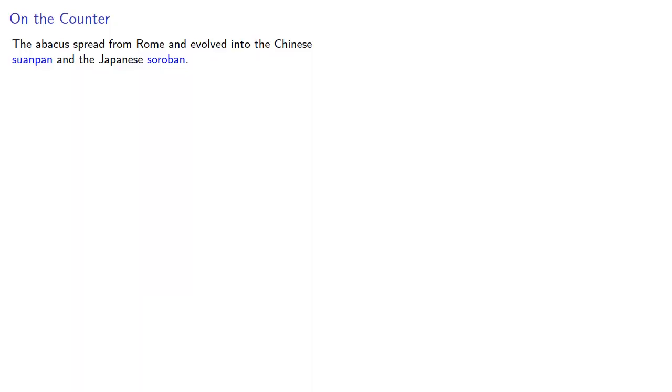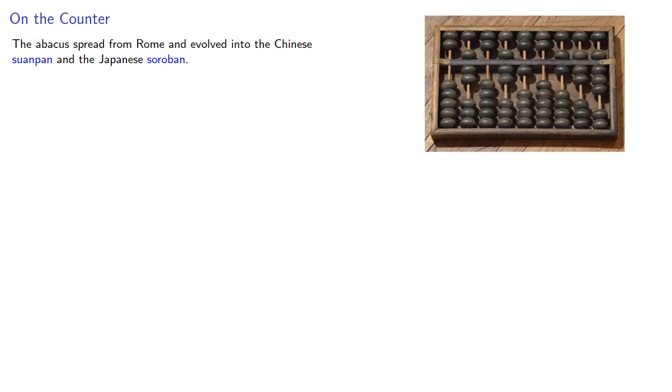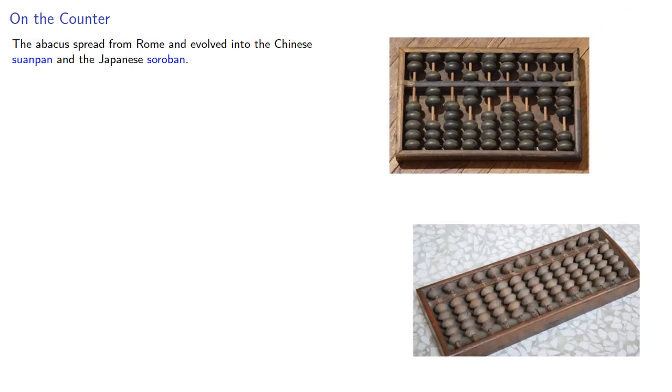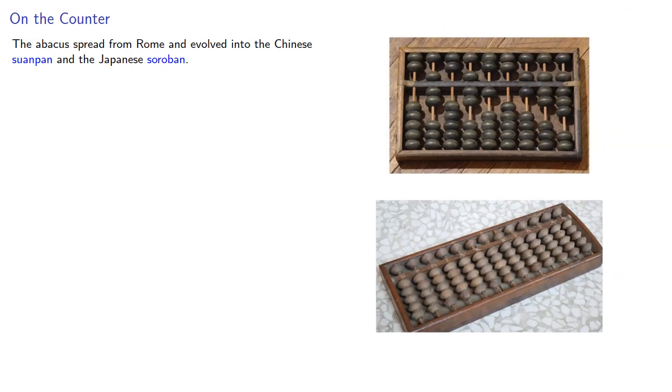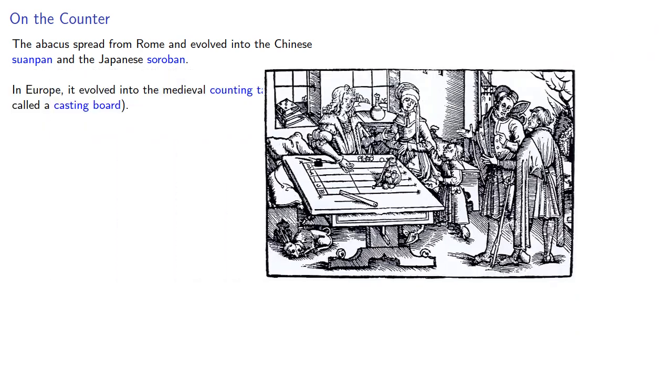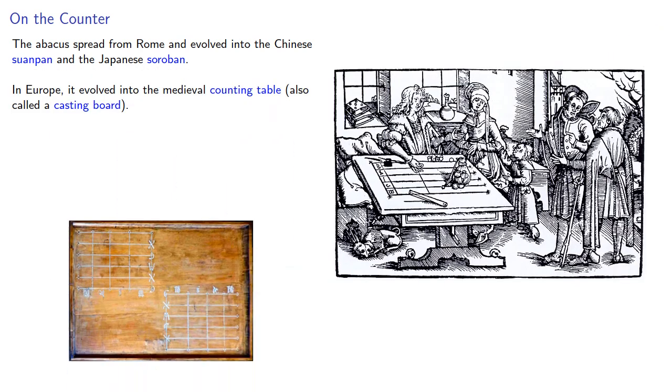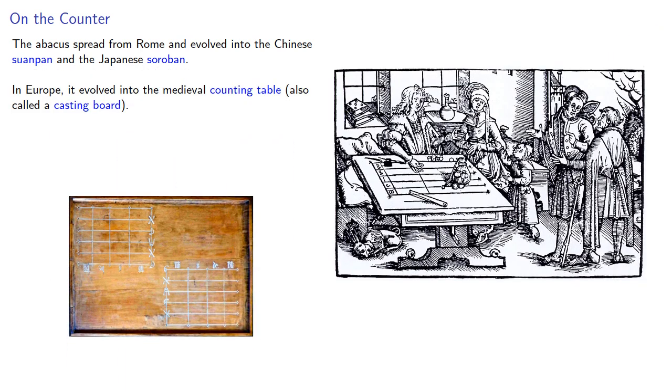The abacus spread from Rome and eventually evolved into the Chinese suanpan and the Japanese soroban. In Europe, it evolved into the medieval counting table, also called a casting board. The use of a large flat surface for counting led to the use of the term counter for similar large flat surfaces.